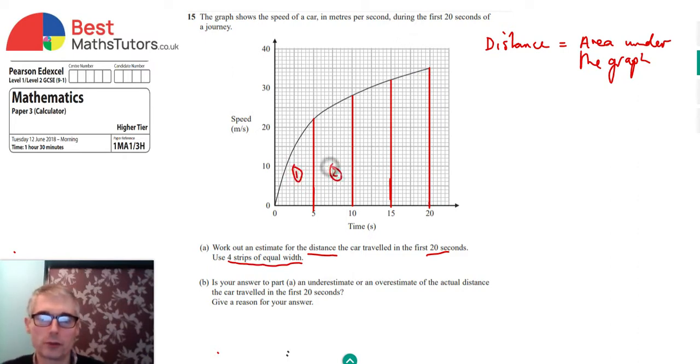So there are four strips. One, two, three, four. Our job is to try and find the area underneath each of these strips, our four strips. And we're going to try and then add them together. And that should give us the area under the graph, which will be the distance that the car has traveled in that time.